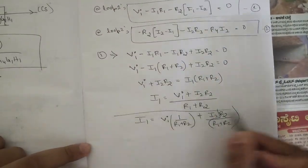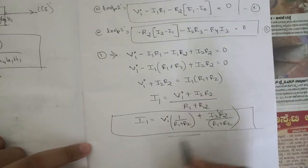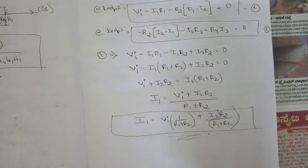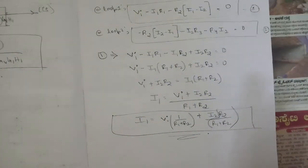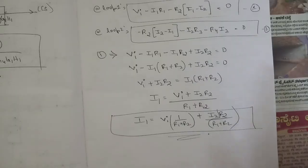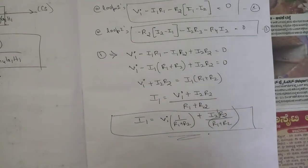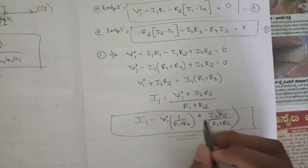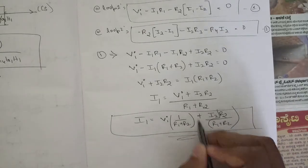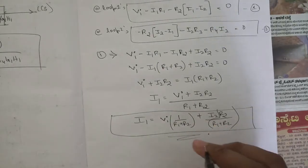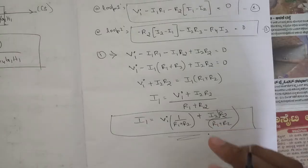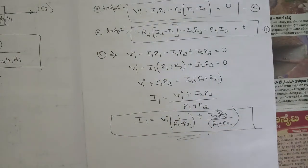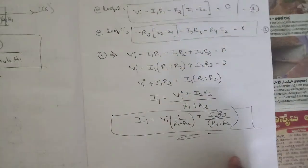Keep the resistor terms in brackets because during the writing of the block diagram, these resistors play the role of blocks — like G1, G2 — which are the feedback blocks. So always keep the resistor terms grouped in brackets.